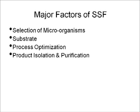Let us look at the major factors that play a key role in solid-state fermentation. The first is the selection of microorganism, which matters greatly for optimal yield. Next is the substrate used for microorganism growth. Then comes process optimization — optimizing the steps involved to improve yield or product recovery — and finally, product isolation and purification.